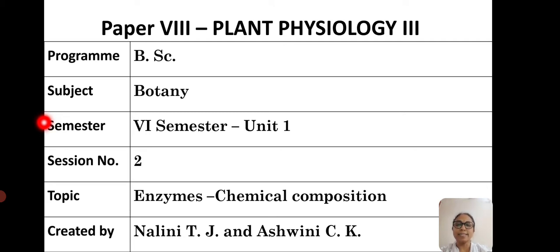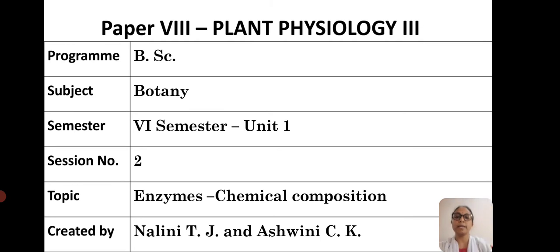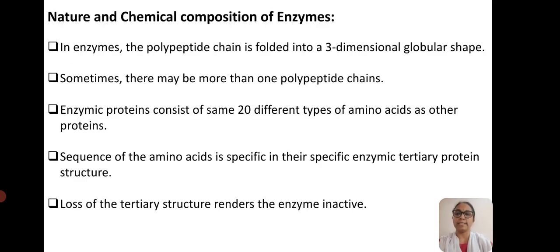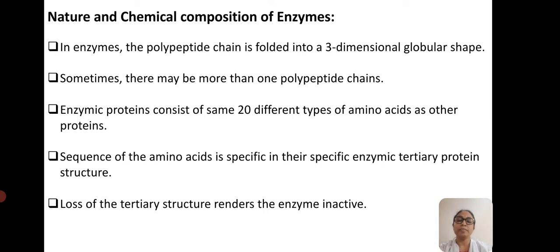In the last session, we discussed about the nomenclature and classification of enzyme. Today, let us see the chemical composition of enzymes. The chemical nature of the enzymes is that all enzymes belong to the globular protein kind.